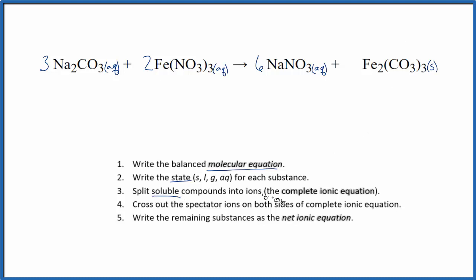Next we'll split all the soluble compounds into their ions. This is the complete ionic equation. So on the periodic table, sodium, that's in group one, it has a one plus charge. So put a plus up here. Carbonate, you'll have to look that up on a table of common polyatomic ions. It has a two minus ionic charge.